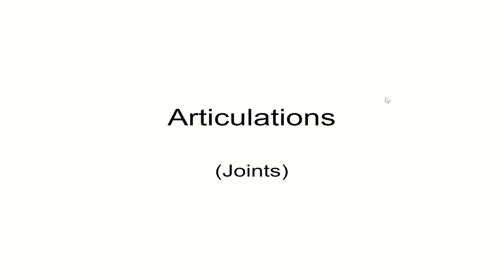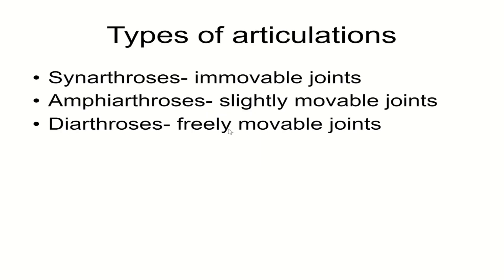We're going to talk about articulations. Articulations are joints — this is where two bones of your skeleton come together in order to make a motion happen. The types of articulations are synarthroses, which are immovable joints; amphiarthroses, which are slightly movable joints; and diarthroses, which are freely movable joints. We're going to talk about each of these in turn.